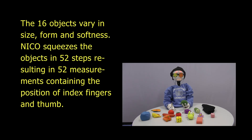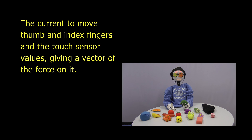The 16 objects vary in size, form and softness. NECO squeezes the objects in 52 steps, resulting in 52 measurements containing the position of index fingers and thumb, the current to move thumb and index fingers, and the touch sensor values giving a vector of the force on it.